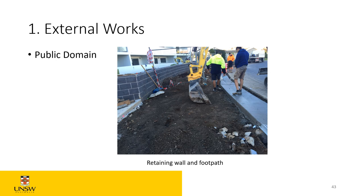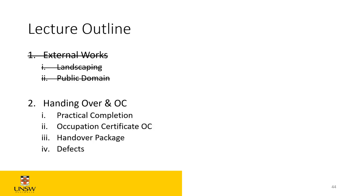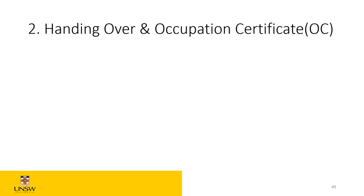Now let's start with handing over the site and the occupation certificate. With the occupation certificate, we need to talk about practical completion first, because practical completion is basically different from the occupation certificate — they can be the same or different depending on what's specified in the contract. We'll also cover the handing over package and defects.